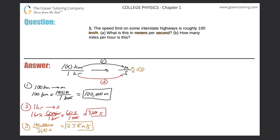Now let's take a look at part B. It says: how many miles per hour is this? So basically we have to do a very similar process — we're given 100 kilometers per hour and we have to convert that into miles per hour. Again, a three-step process.